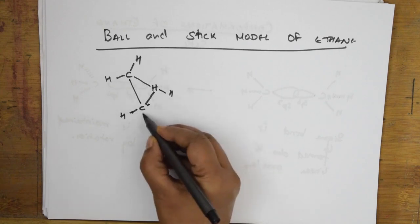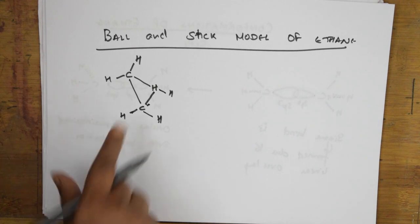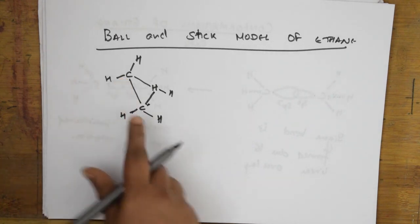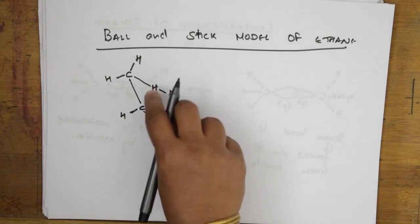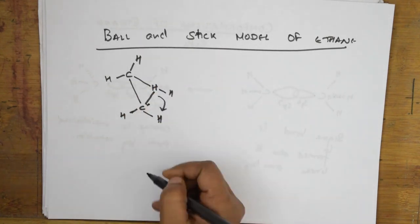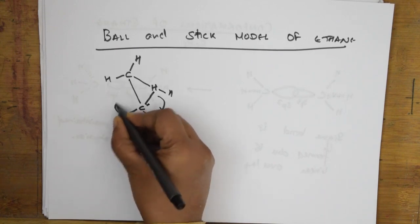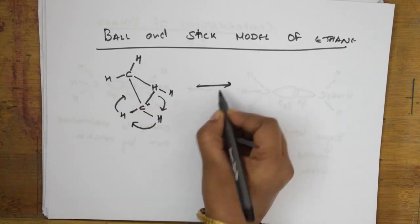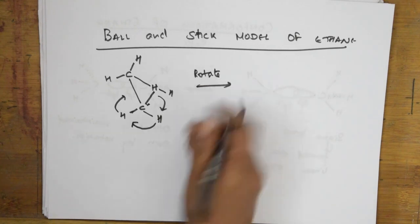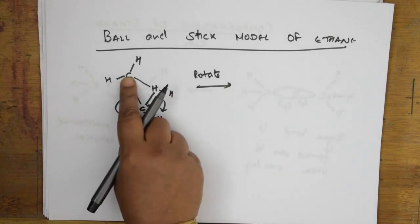Rotating further 60 degrees gives the fifth conformation — partially eclipsed again. Rotating another 60 degrees gives the sixth conformation — another gauche form. So the six conformations of butane are: fully eclipsed, gauche, partially eclipsed, anti-staggered, partially eclipsed, and gauche again.